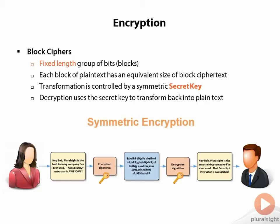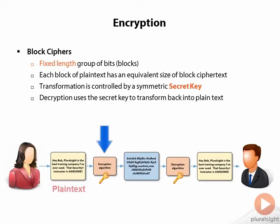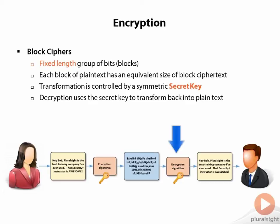Alice types up her message, it passes through the block cipher in 64-bit chunks — for every 64 bits that go through, 64 bits of ciphertext come out. The plaintext goes through the encryption algorithm and comes out as ciphertext. On Bob's end, he has the same key and the same decryption algorithm to decrypt the message. If that data were intercepted by someone without the key, they couldn't decrypt it — so the message is protected in transit.